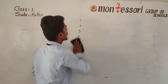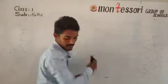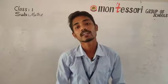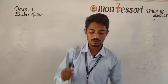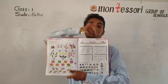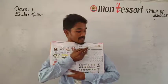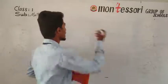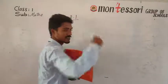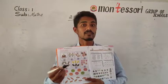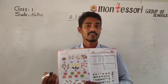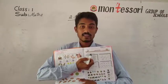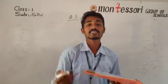Now what are we going to learn? A new topic — the same on numbers. Open the textbook to page number 11. You can see Innings 2.1. The first question is count and color as directed.